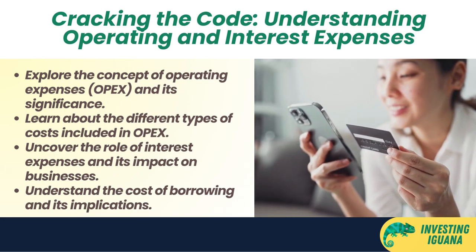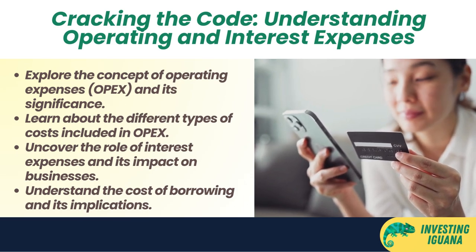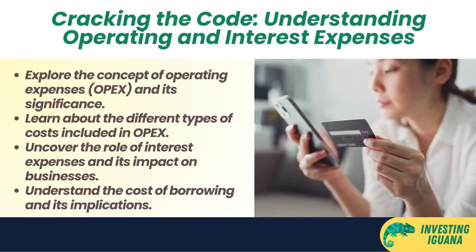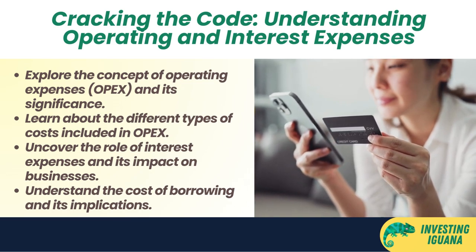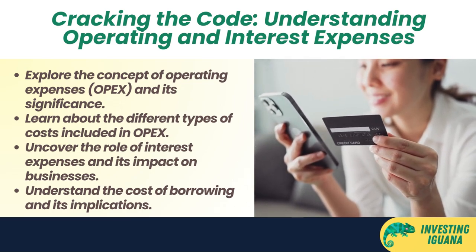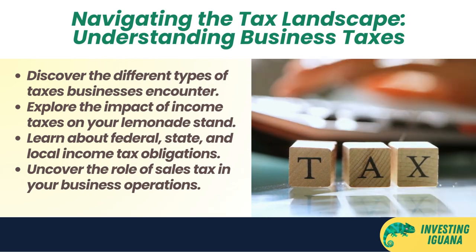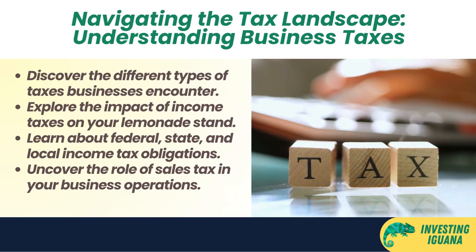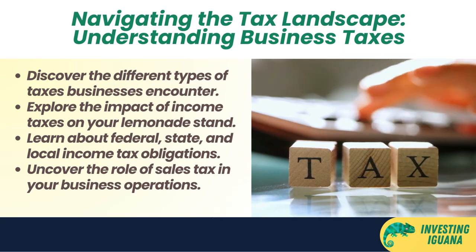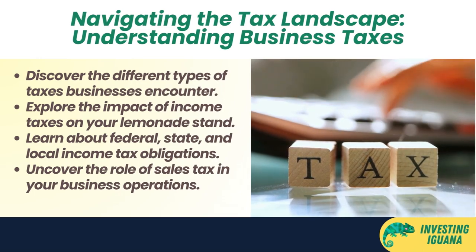Interest expenses are the costs of borrowing money from lenders or creditors — things like interest payments on loans, bonds, or mortgages. For example, if you borrowed one hundred dollars from a friend at ten percent interest per year, you'd pay ten dollars in interest annually. Taxes are payments a company makes to the government based on its income, including federal, state, and local income taxes. For our lemonade stand, assume a twenty percent income tax rate.